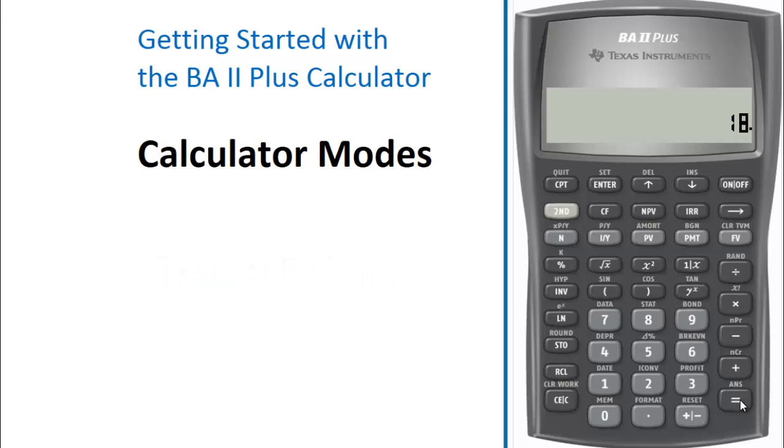This is because the calculator first processes 5 plus 4, obtains 9, and multiplies the result by 2 to obtain 18. So in the chain mode, the BA II Plus Calculator solves the problem in the order that you enter the operators.